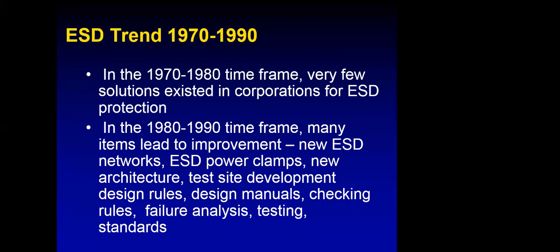In that early time frame there were no books, so there was no way to learn, and the quality of publications was limited. The ESD Association was founded in 1979, so the first open sets of publications were coming out around that time. All that changed. In the 1980s to 1990s timeframe, there were significant advancements in circuit design, power clamps, chip architecture, test site development, rule development, checking rules, more failure analysis, and more development of ESD standards.